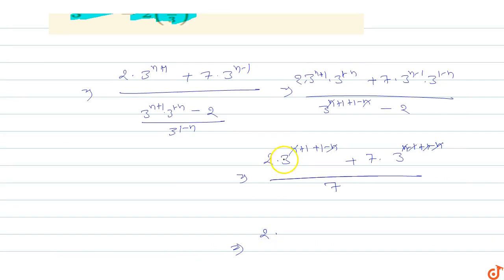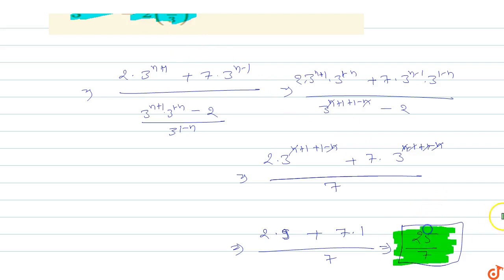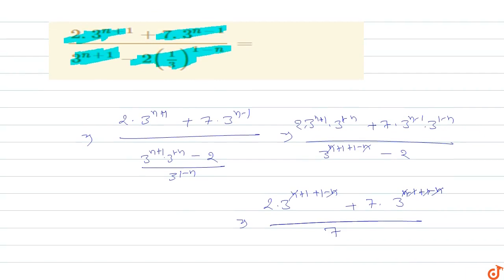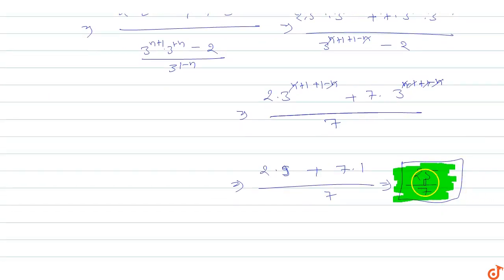So we have 2 into 3 power 2 plus 7 into 3 power 0, upon 7. This equals 2 into 9 plus 7 into 1, upon 7. That is 18 plus 7 upon 7, which equals 25 upon 7. So the value of this expression is 25 upon 7. Therefore 2 into 3 power n plus 1 plus 7 into 3 power n minus 1, upon 3 power n plus 1 minus 2 times 1 upon 3 power 1 minus n, equals 25 upon 7.